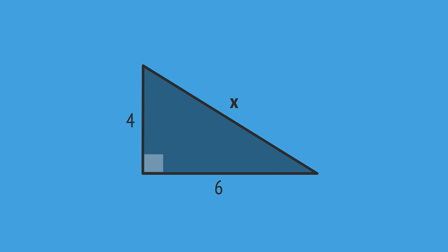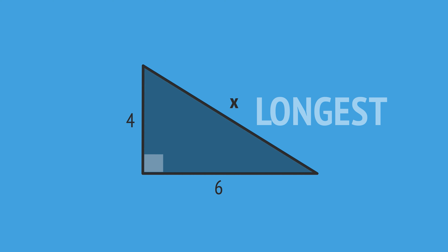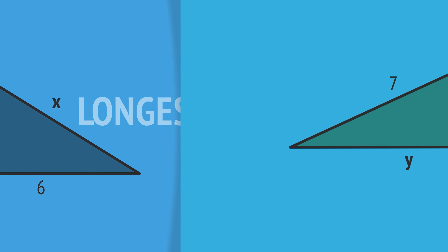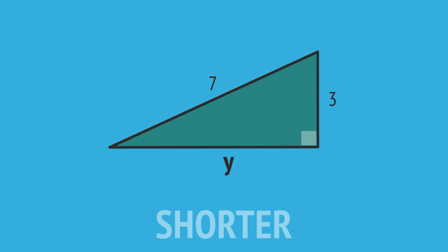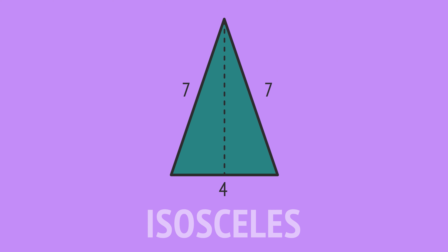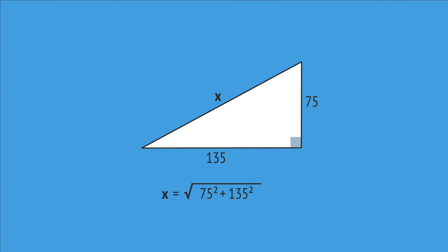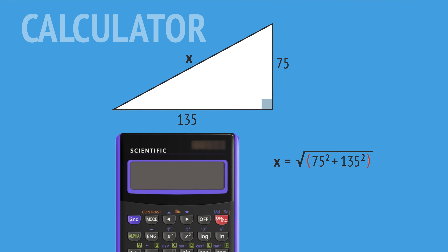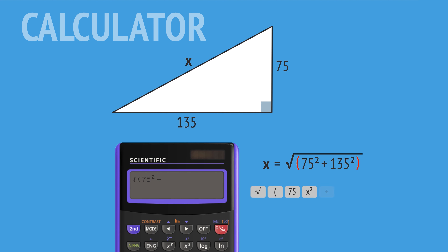In this video, we use Pythagoras to calculate the third side of a triangle, given the other two sides. This may involve calculating the longest side, as in this example, or calculating one of the shorter sides, as in this example. We'll also use Pythagoras to calculate the height of an isosceles triangle. And finally, we'll show how to use the formula on a calculator to quickly get the answer.